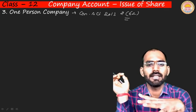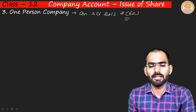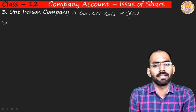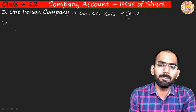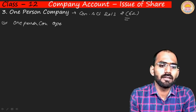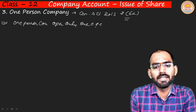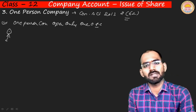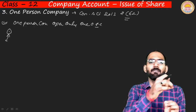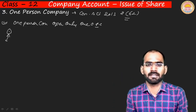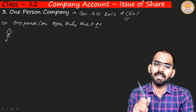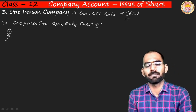One person can only open one OPC. If someone wants to open a public company, a general public member with money can invest in any company and gain ownership proportional to their shares. But in one person company, one person can only operate one OPC — they cannot run two one person companies simultaneously. They are also bound not to purchase shares in any other company if they are already an OPC owner.